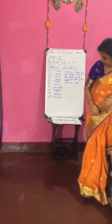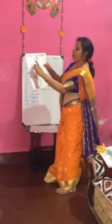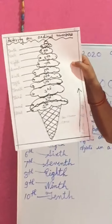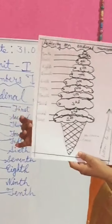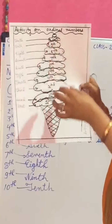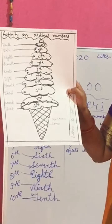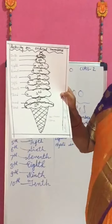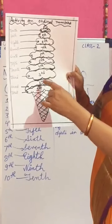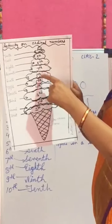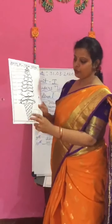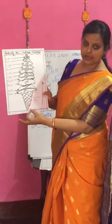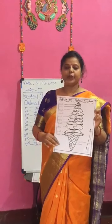So children, now let's move to the activity on ordinal numbers. Here I have made one activity based on ordinal numbers — you can also draw it and do it at home. Take colorful paper and cut it in the shape of clouds — different types of clouds. On each cloud, write 1st, 2nd, 3rd, 4th, 5th, 6th, 7th, 8th, 9th and 10th. You also need to make one ice cream cone. This activity makes ordinal numbers very interesting and you will learn them fast.